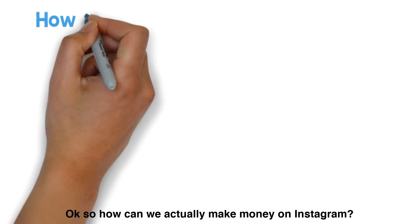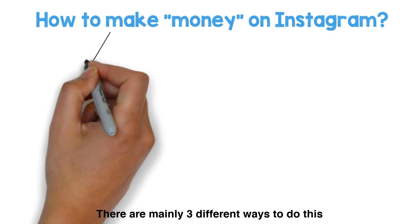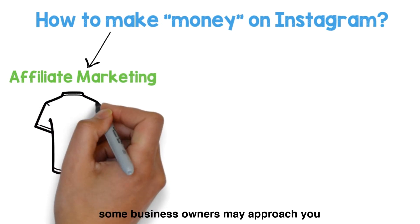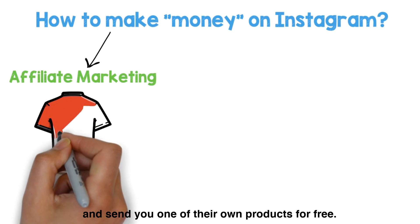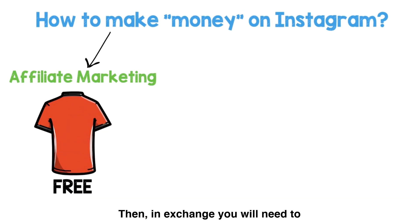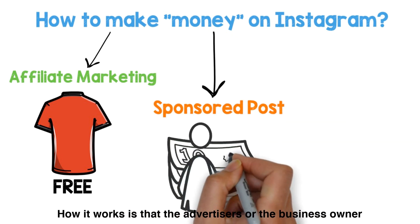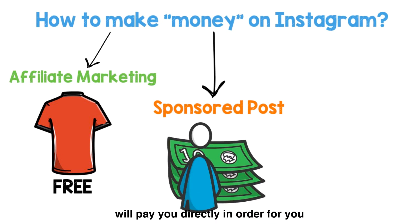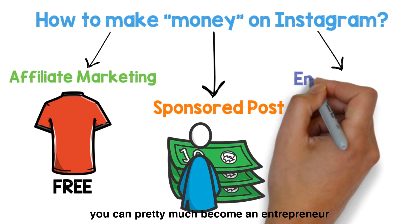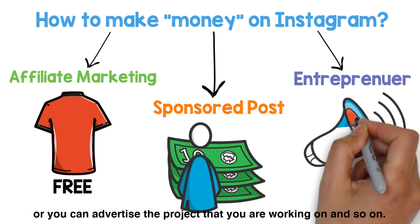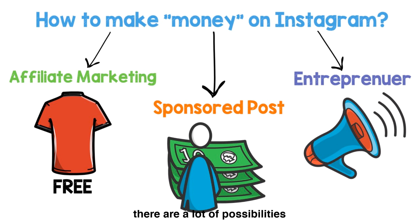So how can we actually make money on Instagram? There are mainly three different ways. The most common way is through affiliate marketing, where business owners may send you their products for free and in exchange you advertise for them through one of your posts. Another way is through sponsored posts, where advertisers pay you directly to advertise for them. Last but not least, you can become an entrepreneur by designing and selling your own products or advertising a project you're working on. There are a lot of possibilities if you are an Instagram influencer.